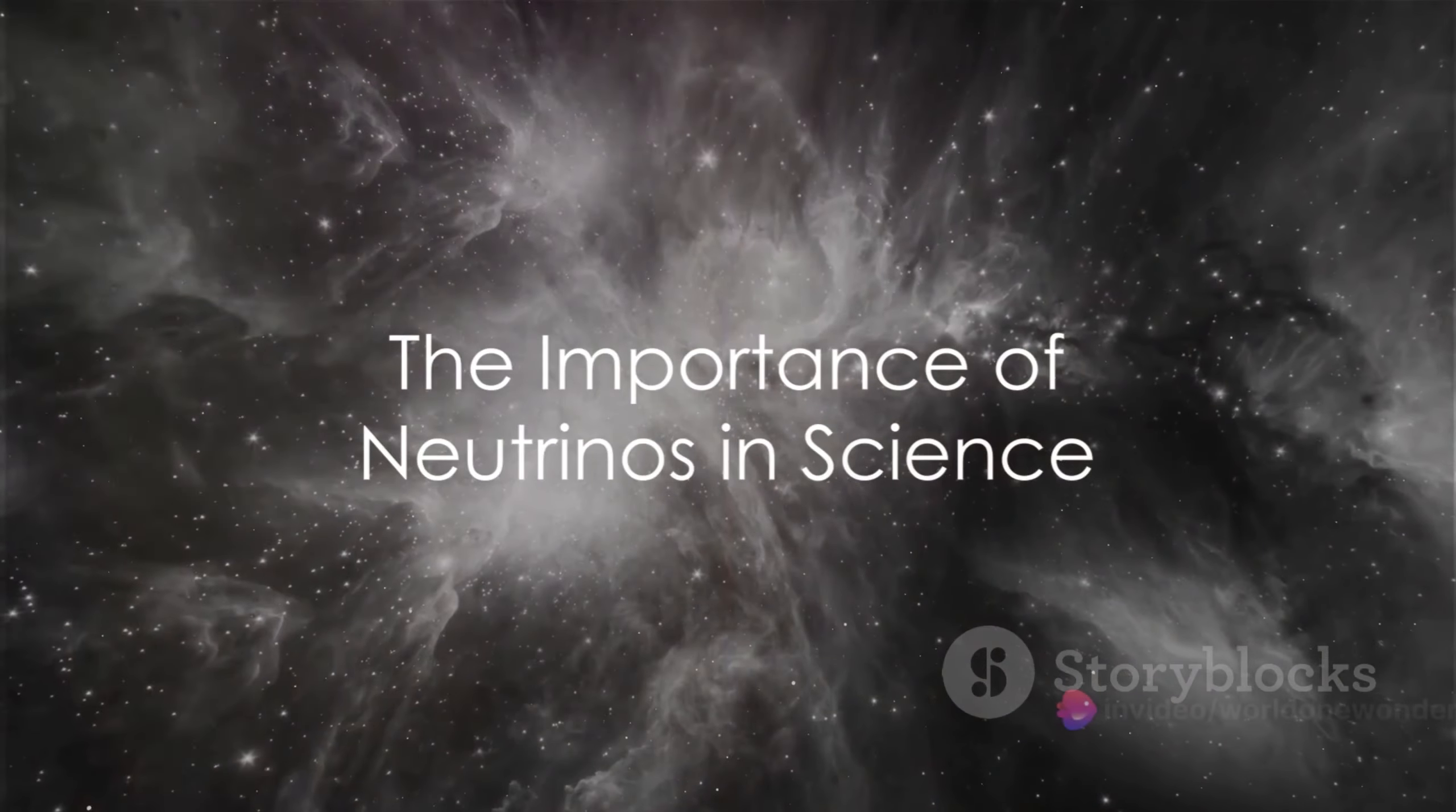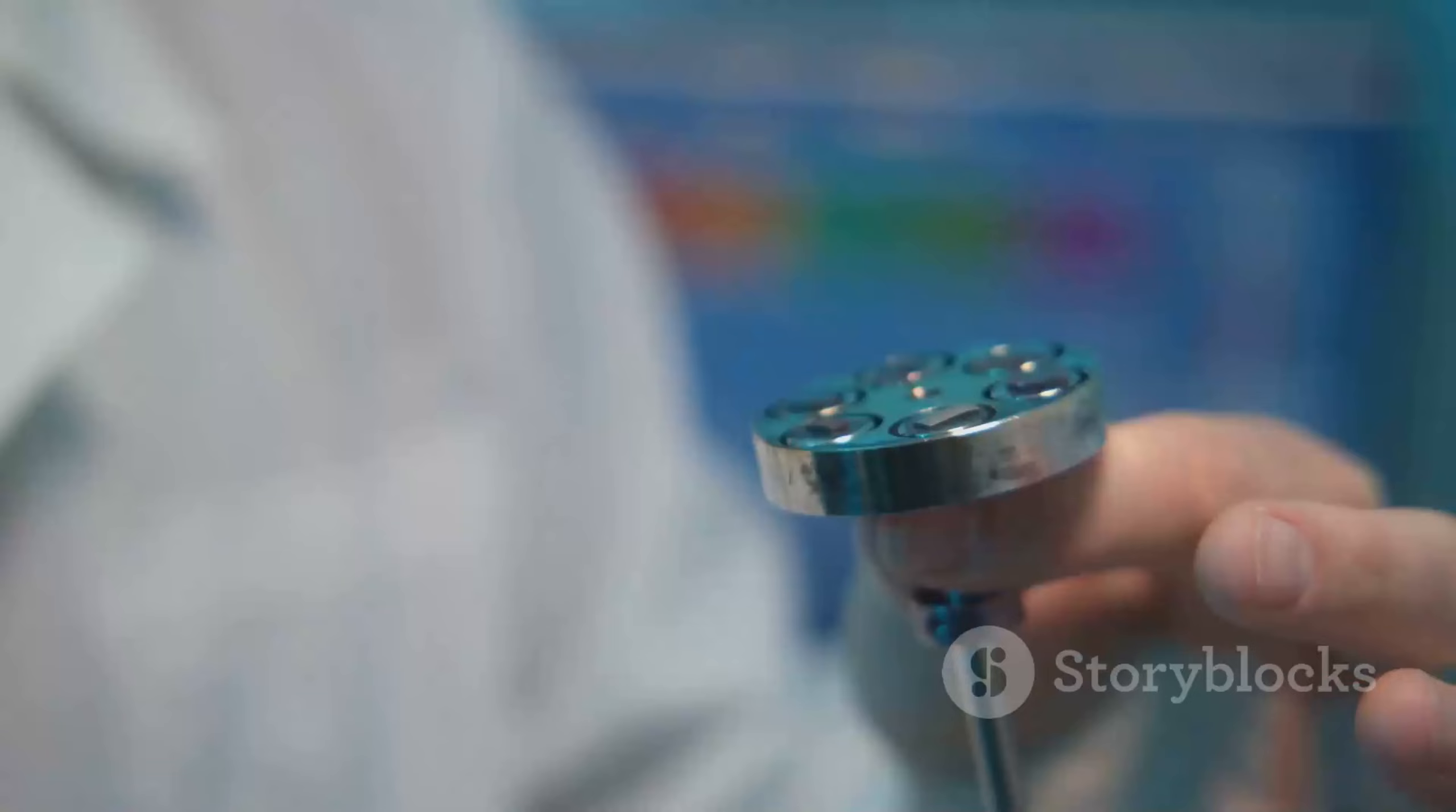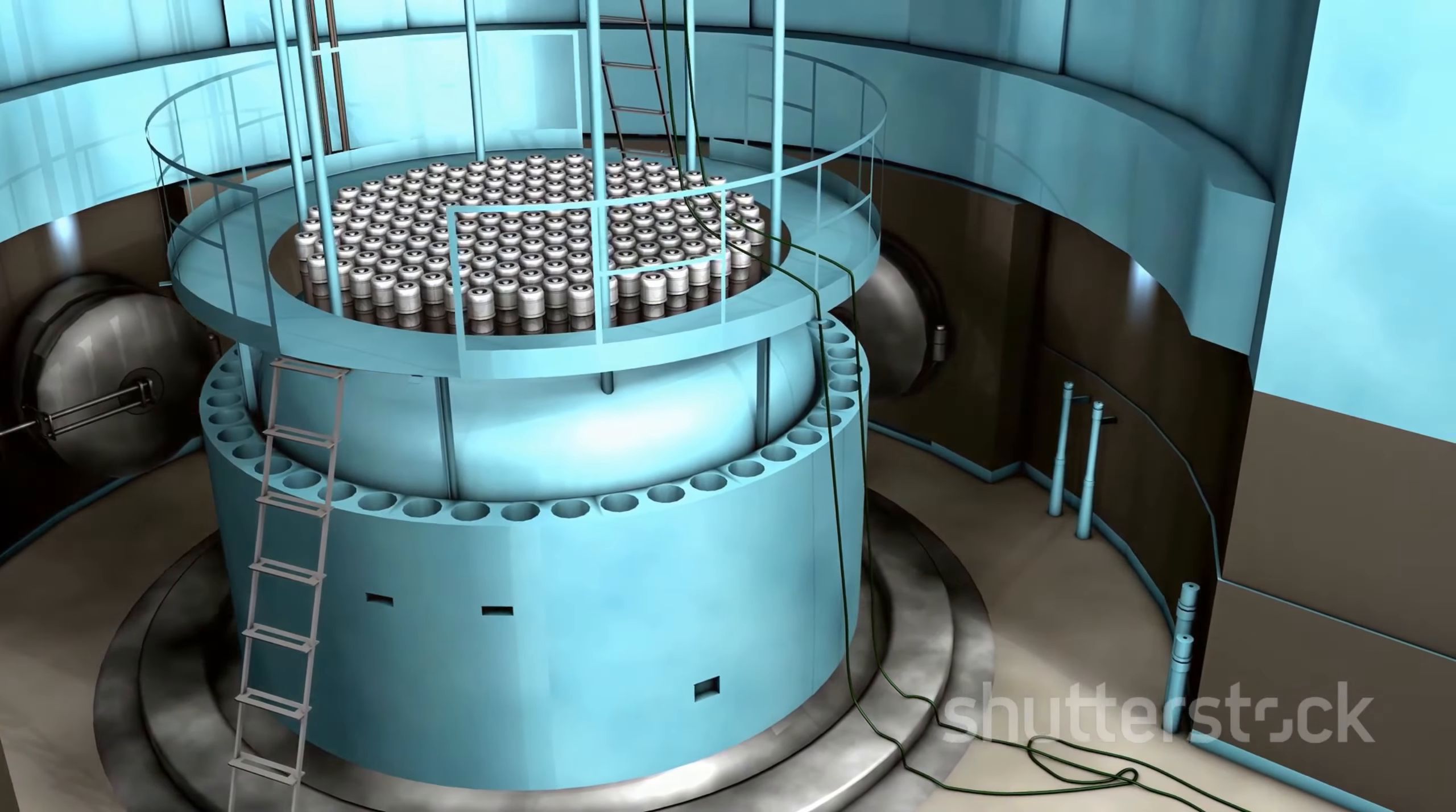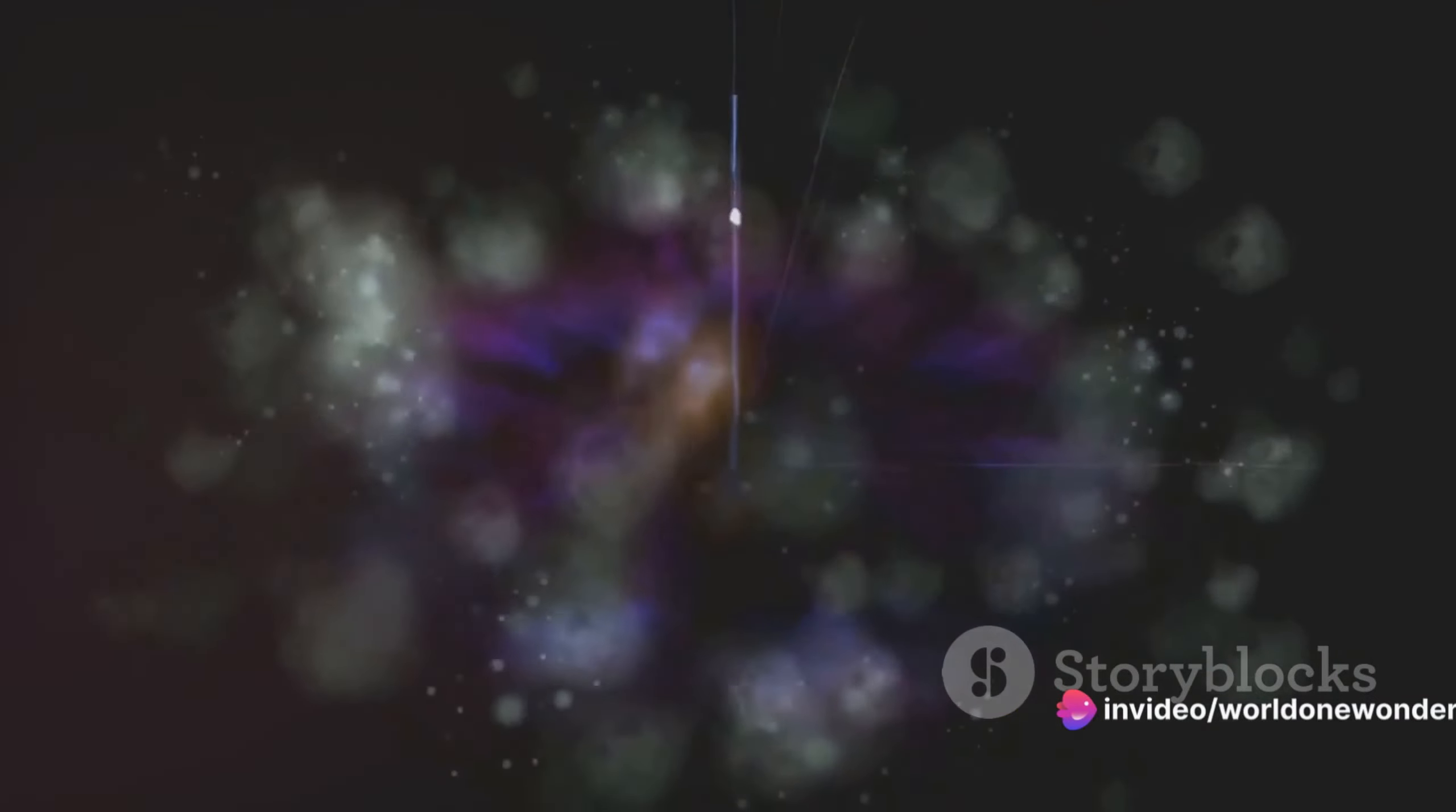You might be wondering why all this fuss about neutrinos. Well, brace yourselves because these ghostly particles are more than just fleeting entities, they hold key insights into the very fabric of our universe. In the grand scheme of the cosmos, neutrinos play a starring role. They are produced by the billions in the fiery cores of stars, including our own sun. As they zip through space, unaffected by magnetic fields they carry with them information about their origin. By studying neutrinos, scientists can peek into the heart of a star, or even into the violent processes that power distant galaxies. These particles are like cosmic messengers, delivering secrets from the farthest corners of the universe right to our doorstep.